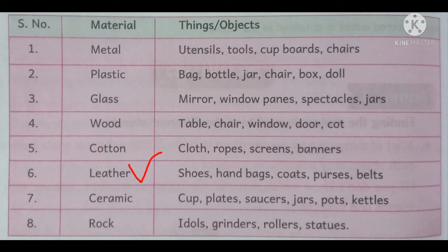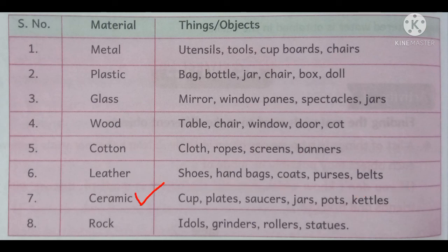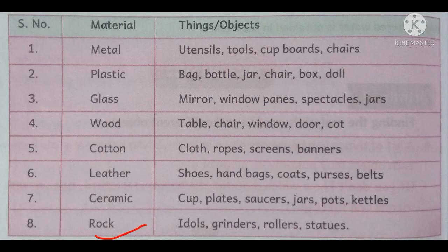The next one is leather. We use leather in various ways — by preparing shoes, handbags, coats, purses, belts, etc. The next one is ceramic. By using ceramic, we can prepare cups, plates, saucers, jars, pots, and kettles. And the last one is rock. By using rock, we prepare idols, grinders, rollers, statues, etc.